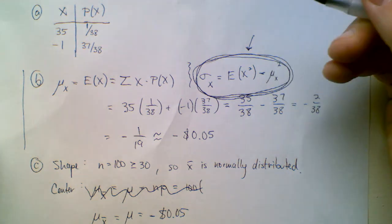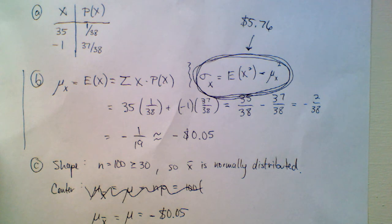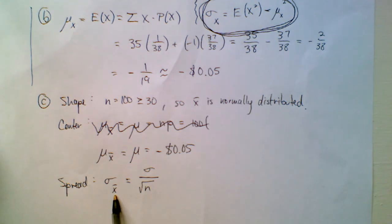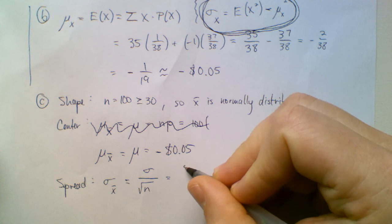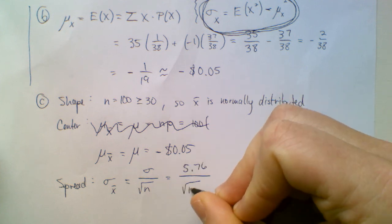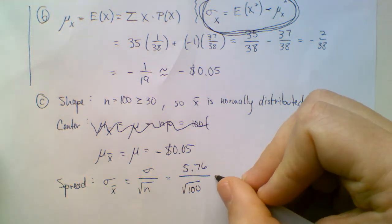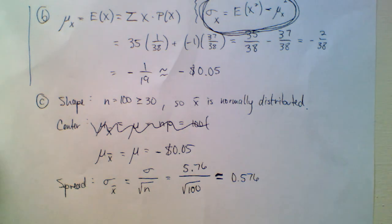Once you do all that, you should get a standard deviation of $5.76. So to finish up Part C, the standard deviation of x-bar is going to be the population standard deviation from Part B divided by the square root of the sample size. So it's 5.76 divided by the square root of 100, which is exactly equal to 0.576.